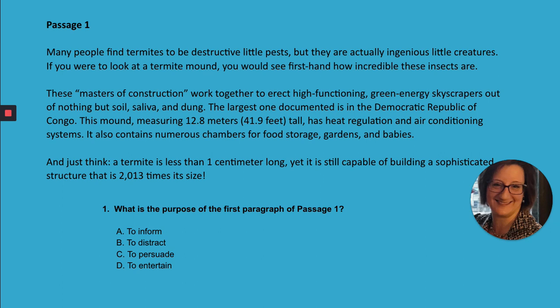Now, if the question asked about paragraph two in this passage, that might come out differently. When I look at that paragraph, I realize there's a lot of information being provided — the author is actually informing me about why termites are these ingenious little creatures. So you can see two things here: number one, you have to read the question very carefully to know what part of the passage you're being asked to analyze. And number two, in the same passage with multiple paragraphs, there might be clues that the writer is using information to support their purpose — to persuade, to inform, or to entertain. So you have to look at the overall message the author is trying to convey.